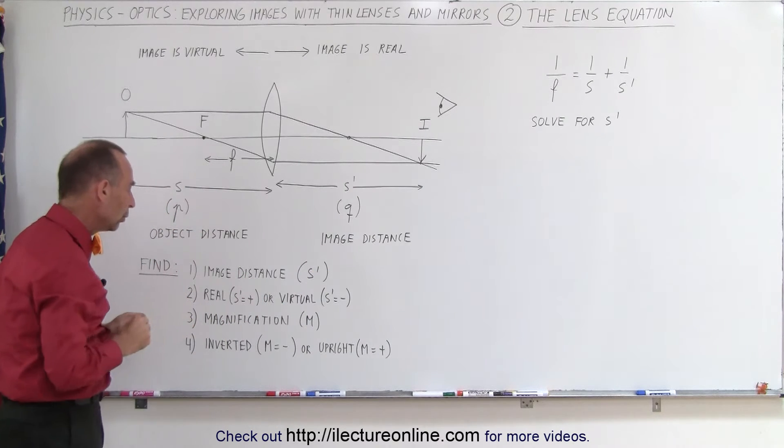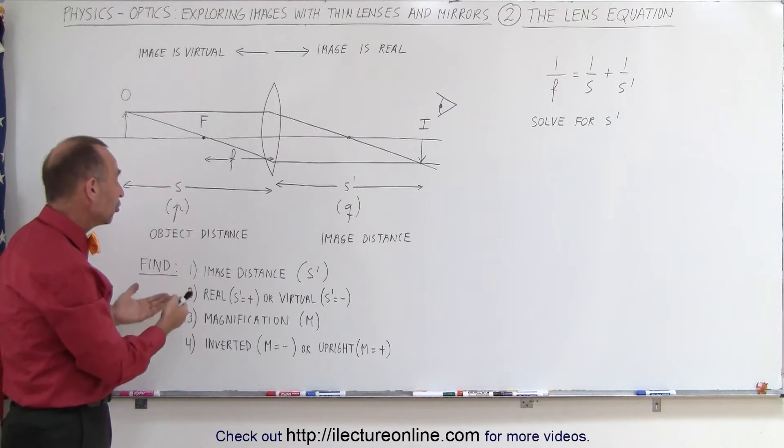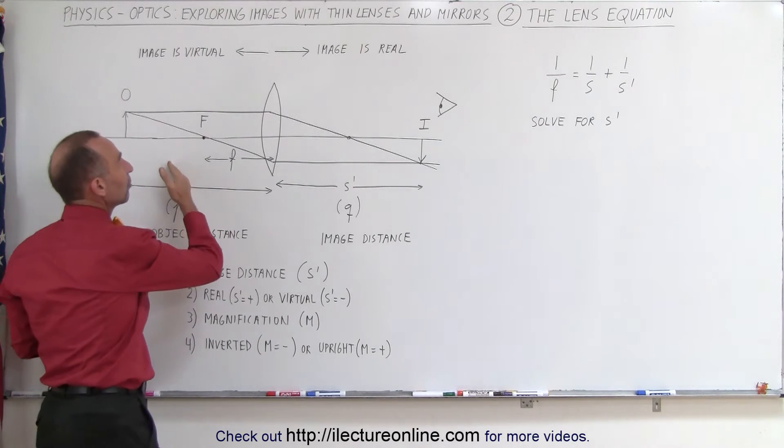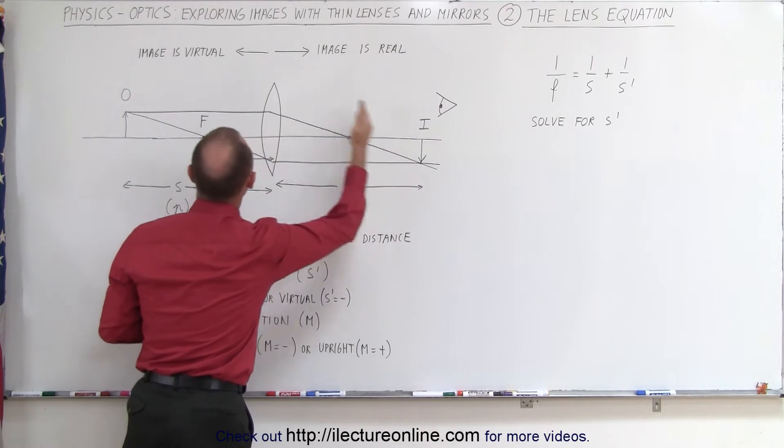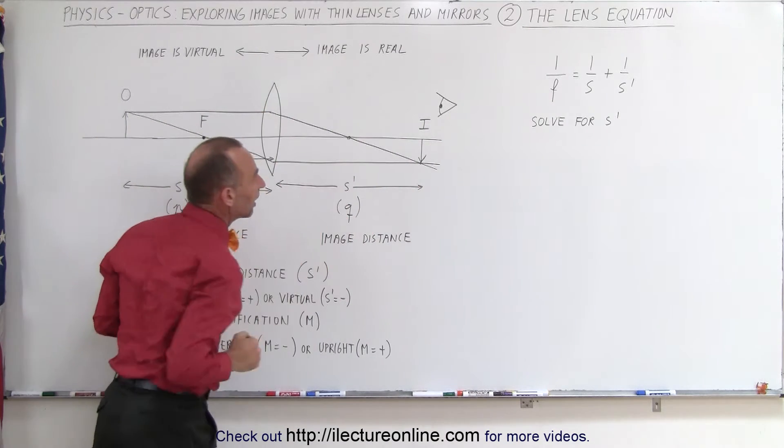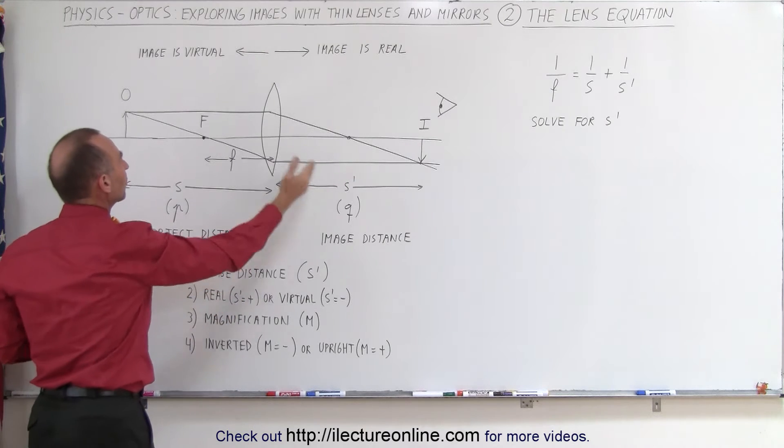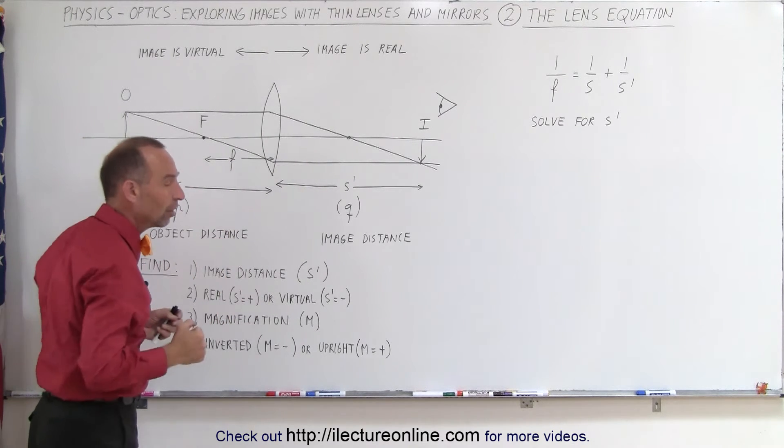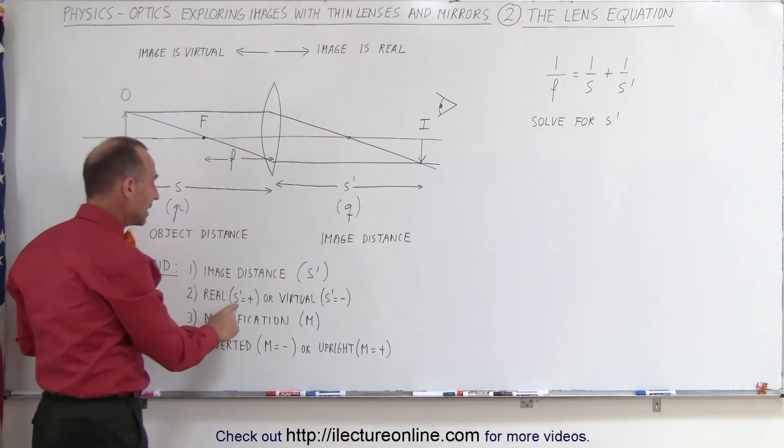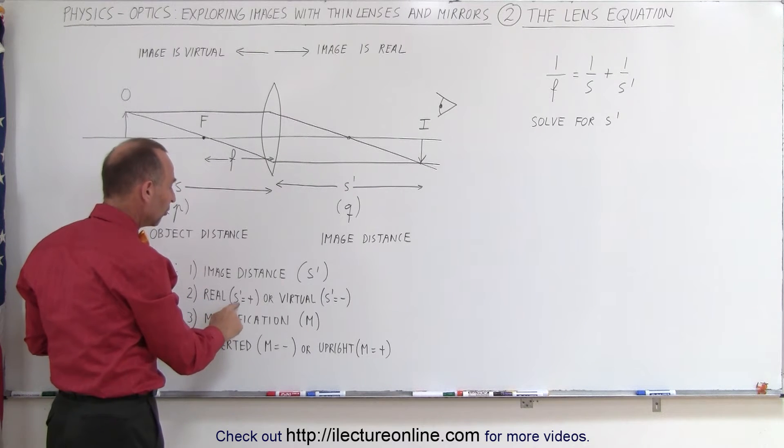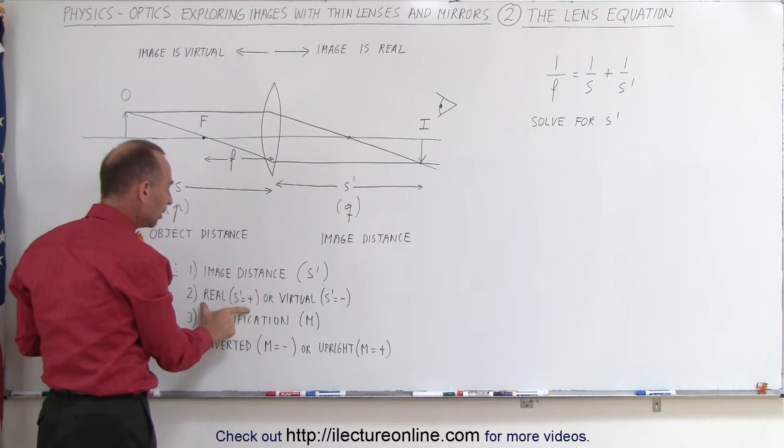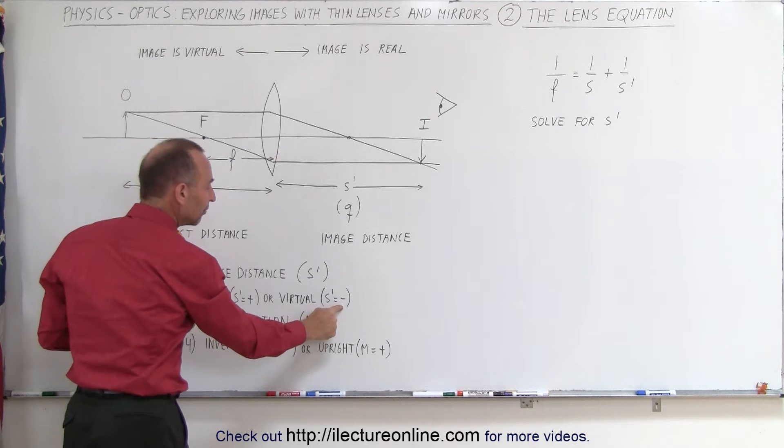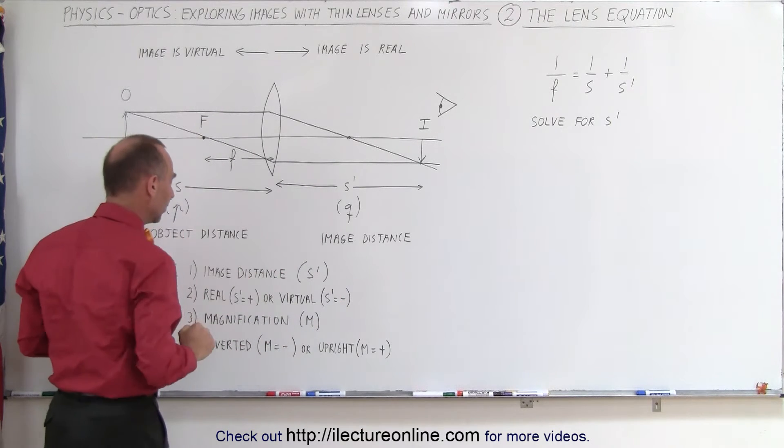They will want to know or they will ask you if the image is real or virtual. Now in the case of a lens, if the image appears on the right side, on the other side relative to the object, on the right side of the lens, then it's called a real image. If the image forms on the same side as the object, on the left side of the lens, then it's called a virtual image. How do you know which way it is? Well, by looking at the image distance. If the image distance is positive, we know it's a real image, because that means it's on the right side of the lens. If the image distance is negative, then it's a virtual image, because then it's on the left side of the lens.